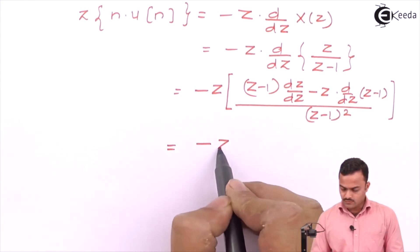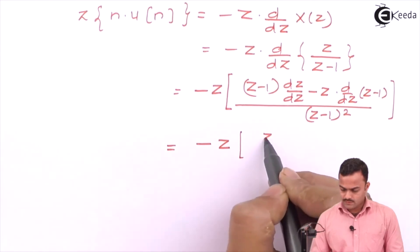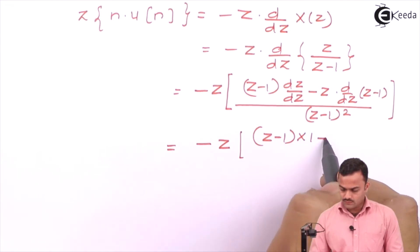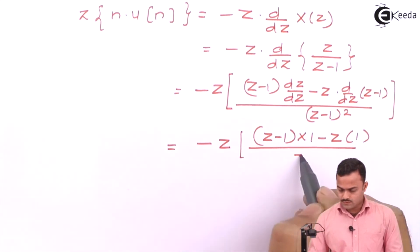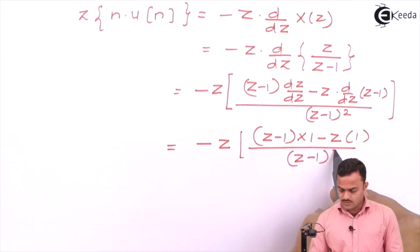It is equal to minus z times [(z - 1) times 1 minus z times 1] upon (z - 1) squared.